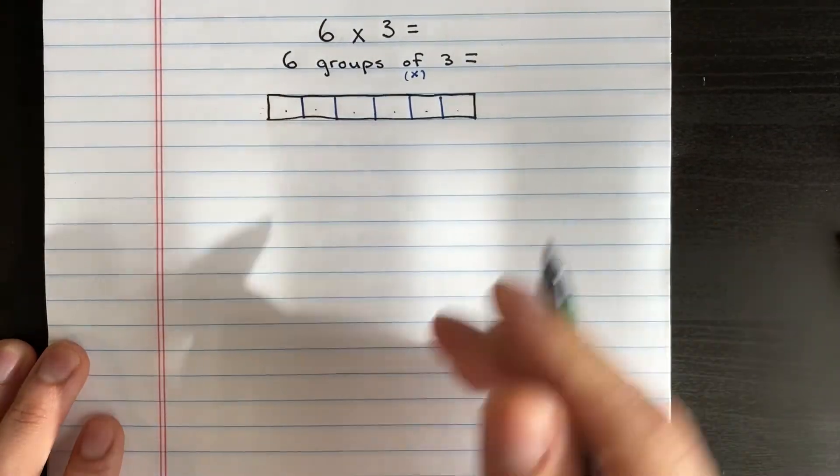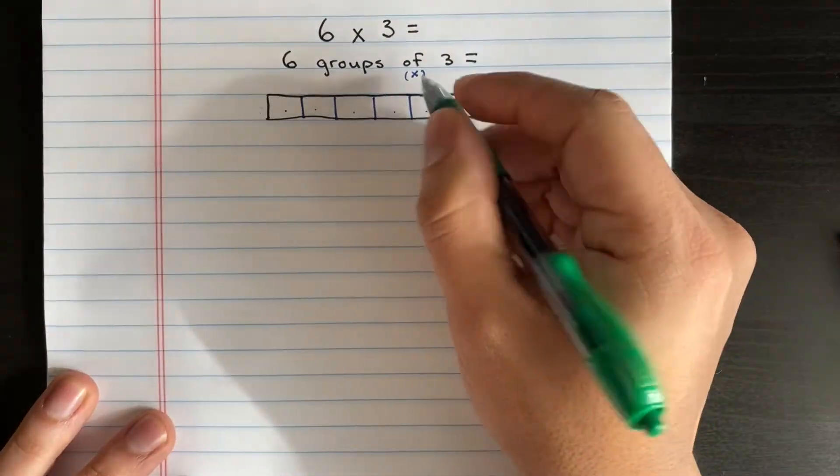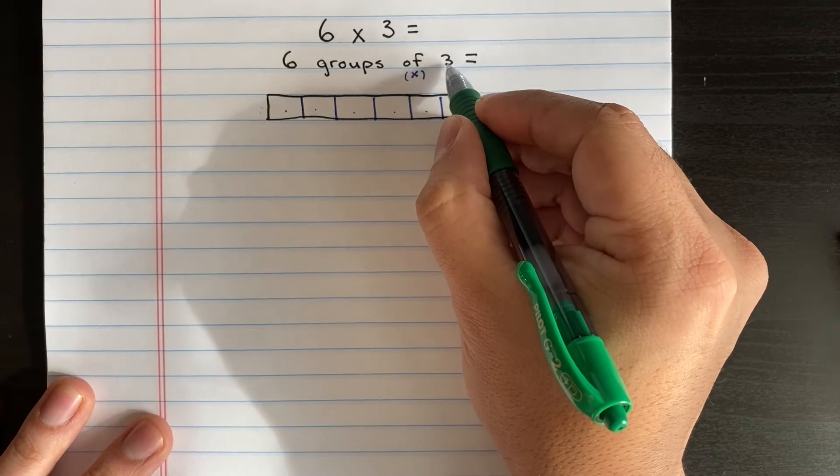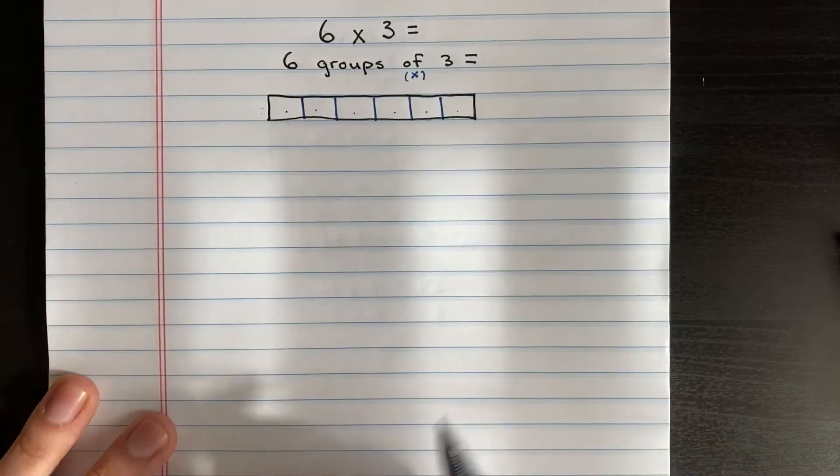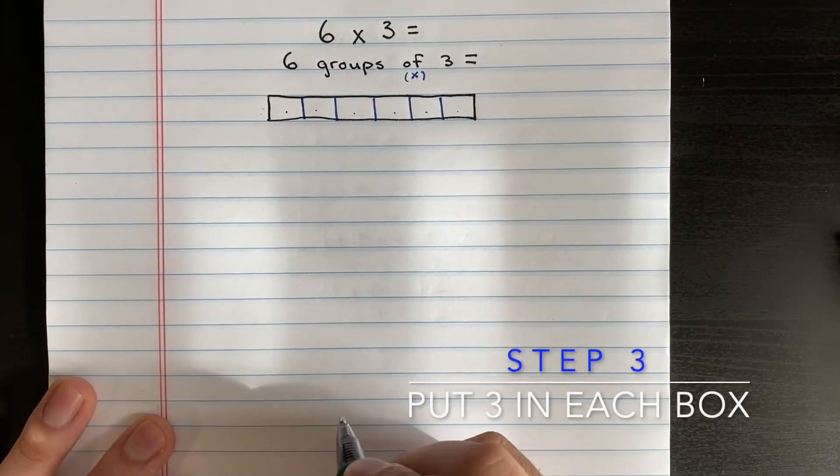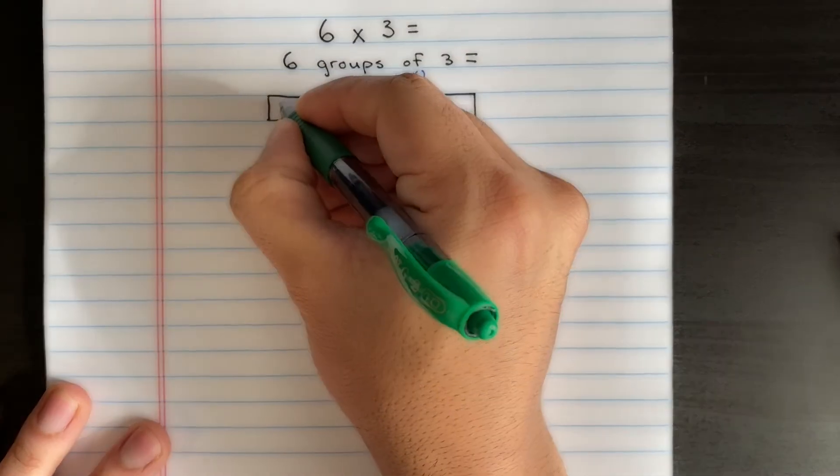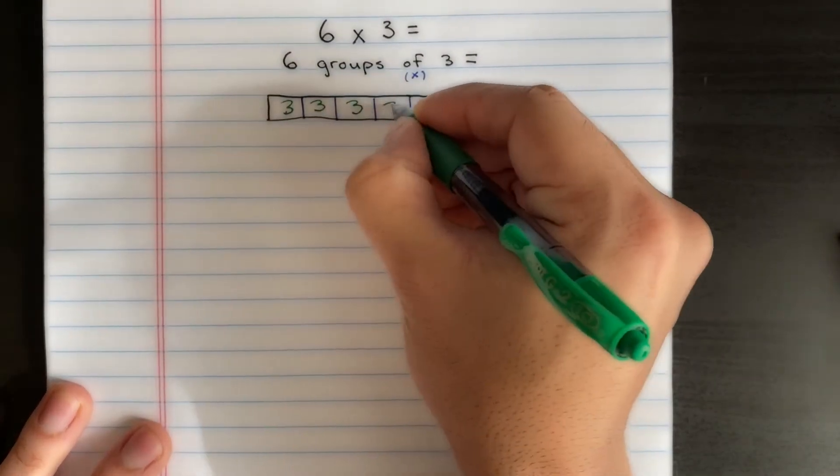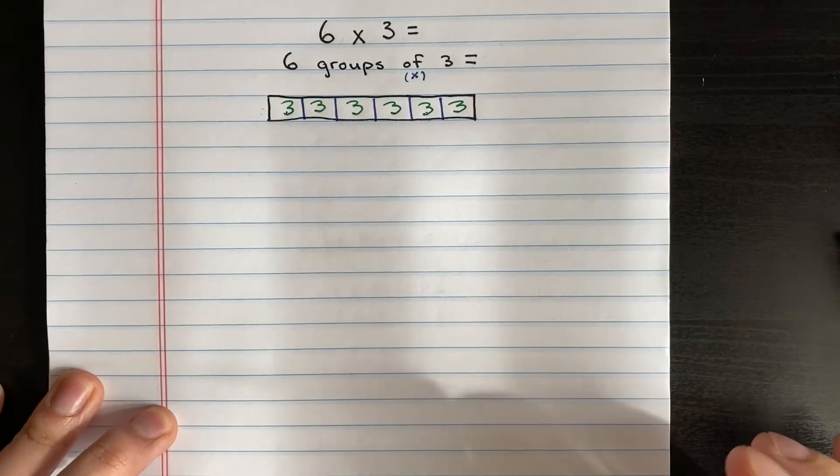Okay, so we need to put three in each little group here, so let's go ahead. Okay, so now we have our six groups of three, okay perfect.